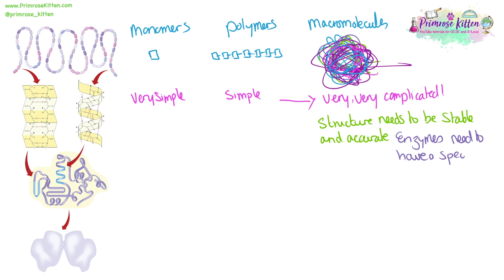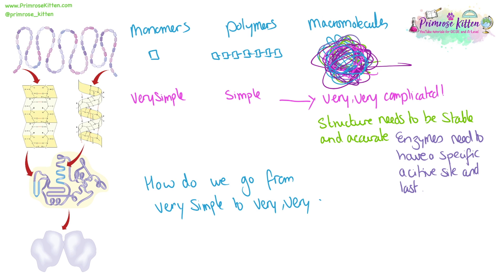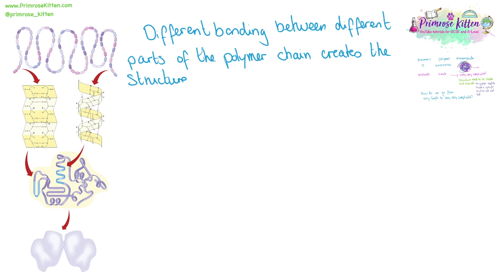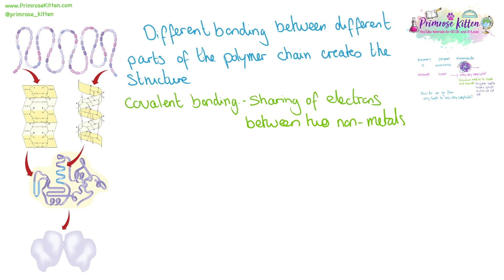For example, enzymes need to have a stable active site which is specific. So how do we go from simple to very, very complicated and stable and specific? This is all due to the different types of bonding between different parts of the polymer chain. Now don't get confused — we are in biology here, not in chemistry — but the first type of bonding you need to know about is covalent bonding, and this is the sharing of electrons between two elements that are non-metals.